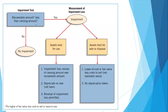Kita juga harus menghitung impairment loss-nya. Ada dua jenis: asset held for use, atau asset held for sale or disposal. Jadi asetnya itu tetap dipakai, ditahan untuk dipakai, atau ditahan untuk dijual, atau dibuang. Pilihannya: mau dipakai lagi, atau dijual, atau dibuang.